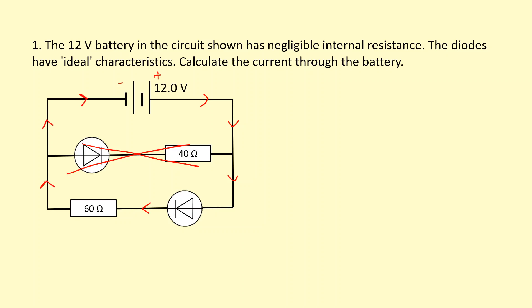However, current can flow in this branch and we're going to assume that the diode has zero resistance. That's what we mean by ideal. In other words, the total potential difference will just be across this resistor. So the current in the circuit will just be through the bottom branch. So it will be 12 volts divided by 60 ohms. That gives us 0.2 amps.